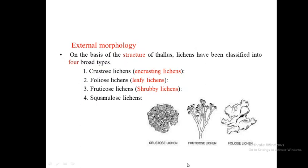On the basis of the structure of the thallus, lichens have been classified into four broad types: Crustose lichens, Foliose lichens, Fruticose lichens, and Squamulose lichens.